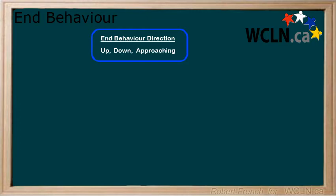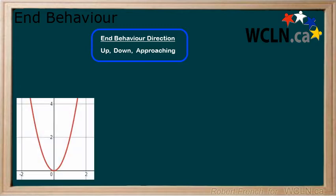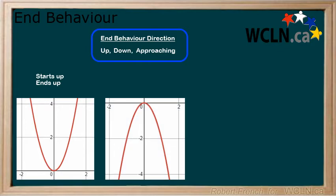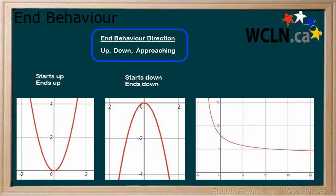Up means that it is coming from or going up. Here is an example where a function starts and ends up. Down means it is coming from or going down. Here is an example where it starts down and ends down. Approaching means that it is approaching a specific value — think horizontal asymptote. Here is an example where it starts up and ends approaching y equals 4.